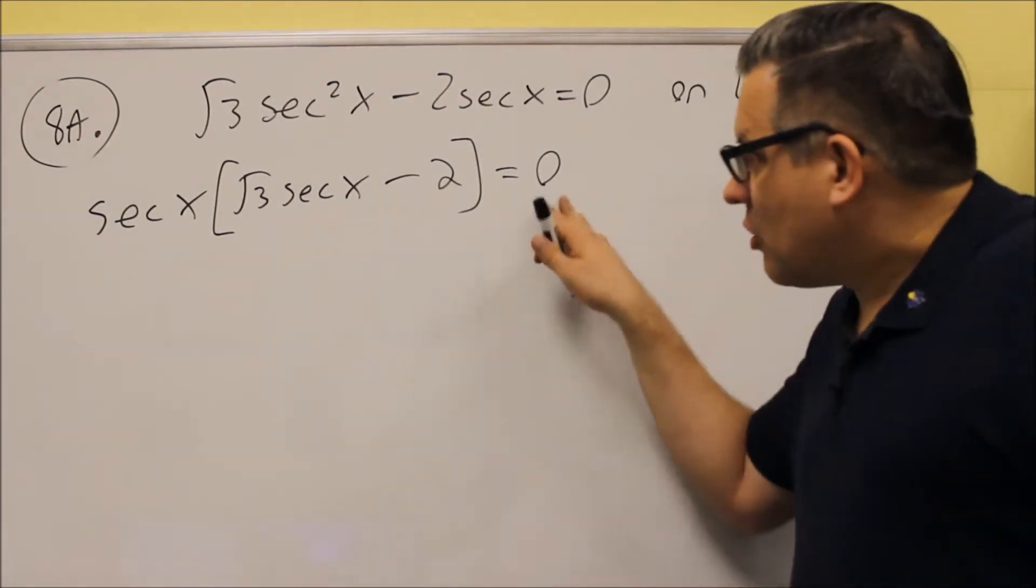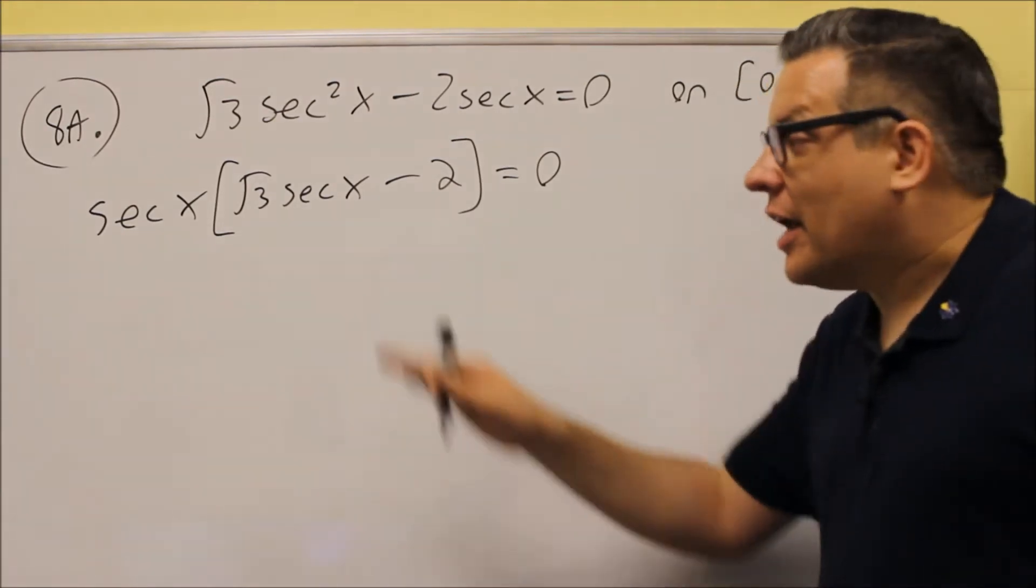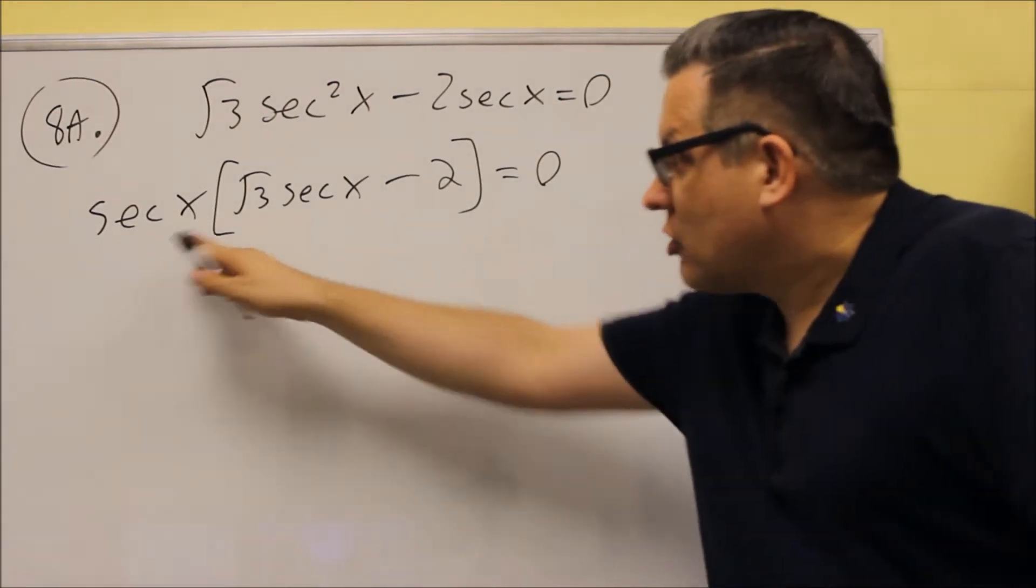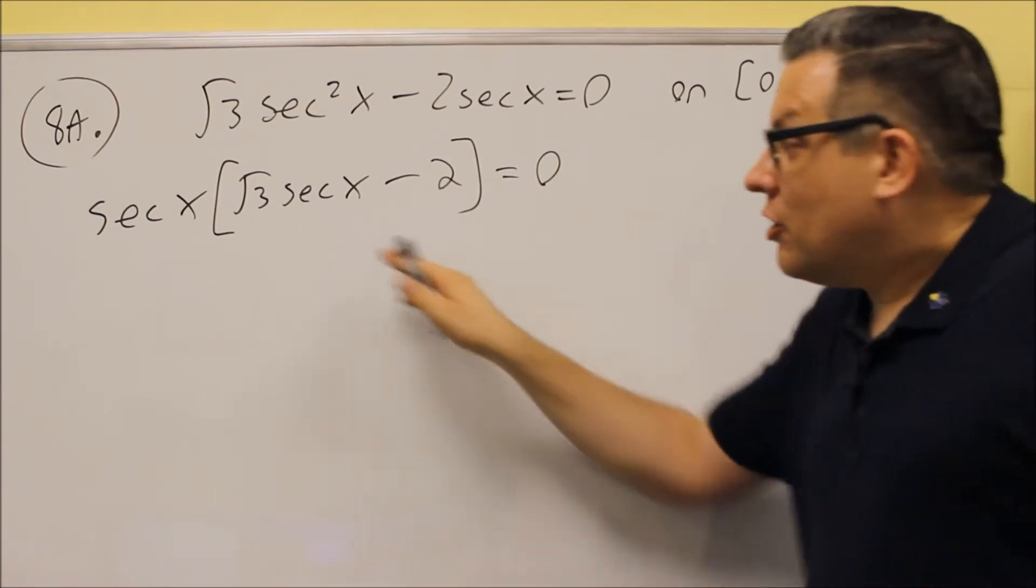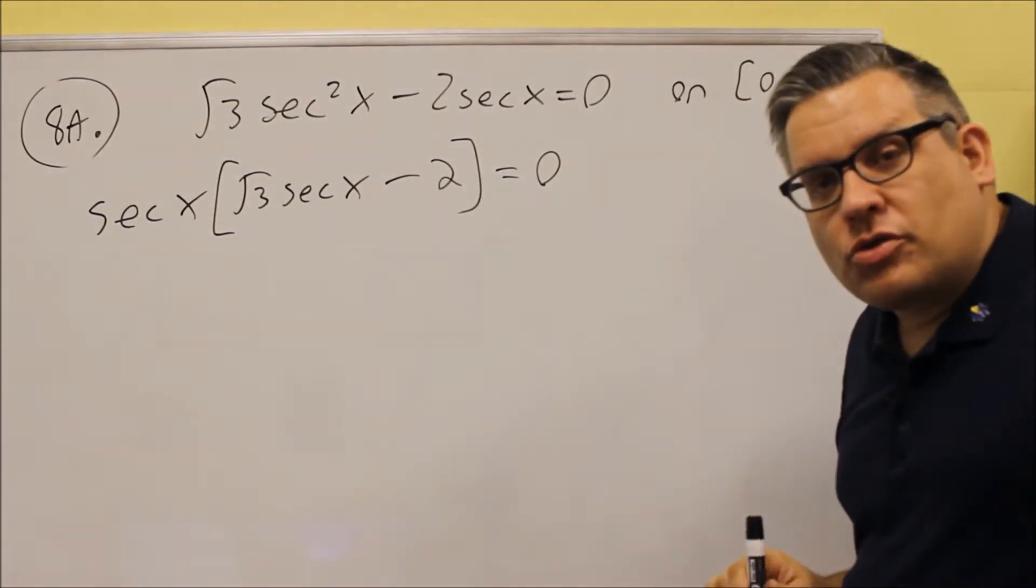Now, because this is set equal to zero, we are going to use the zero product property now that it is factored. You will take the first one and set it equal to zero, and you will take the second one and set it equal to zero.